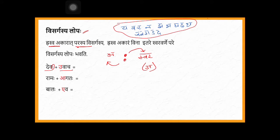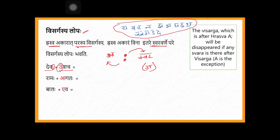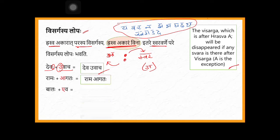See here example: devaha — visarga is here. Before visarga there is 'a' — is 'a' dirga or hraswa? 'a' is hraswa. So hraswa akarath parasya visarga, and then after visarga they said any swara but 'a' should not be there. 'uvacha' — it's not 'a', it's 'u'. So this visarga will disappear. Result will be 'deva uvacha'.